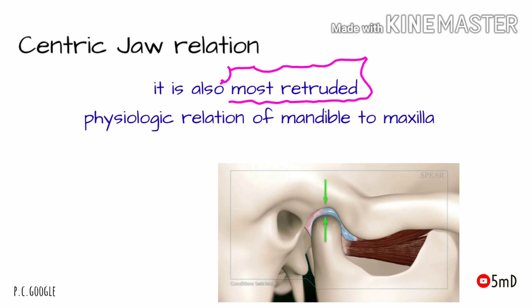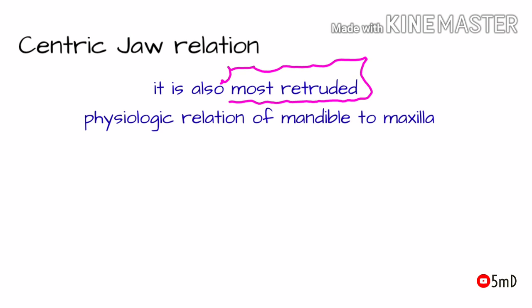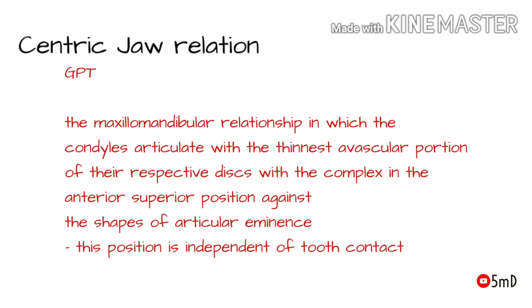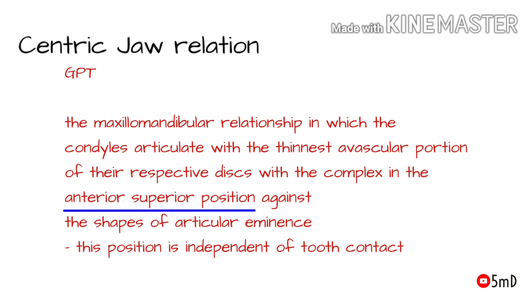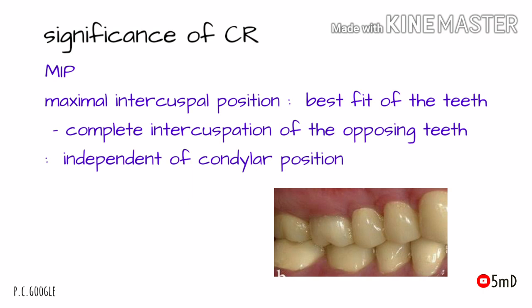Centric relation is also the most retruded physiologic relation of the mandible to the maxilla, from which the individual can make lateral movements. By GPT definition, it is defined as the maxillomandibular relationship in which the condyles articulate with the thinnest avascular portion of their respective discs, with the condylar complex in the anterior superior position against the slopes of the articular eminences. This position is independent of tooth contact.